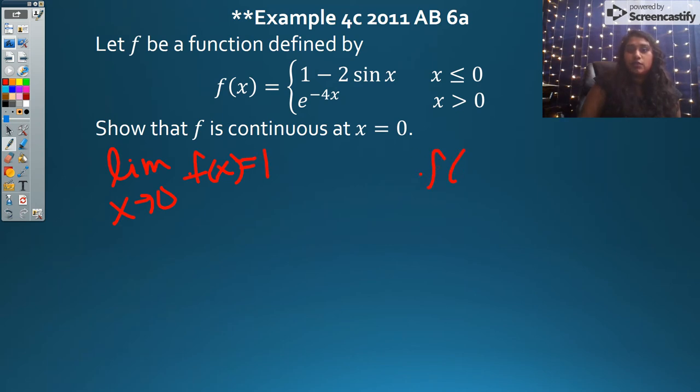What about my function value at 0? Well, that means I'm just evaluating my piecewise function. Which one includes 0? Does this one? Does this one? Yes. And I've already solved this. 1 minus 2 sine of 0. We know that that equals 1.